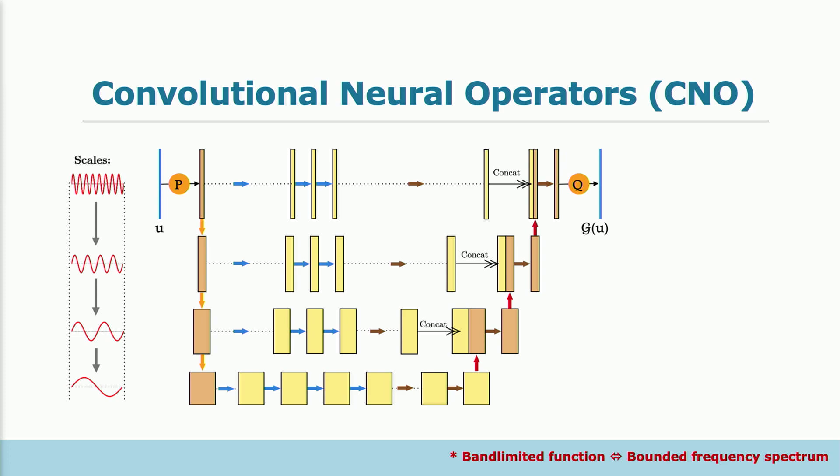We use this U-Net-like architecture, but we changed all the fundamental operations in the U-Net to account for the fact that we learn operators and we deal with function spaces and not just the Euclidean data. So we adapted the downsampling and upsampling block. We also adapted the activation layers.